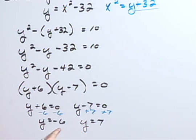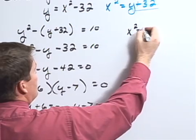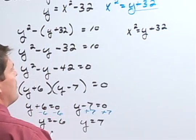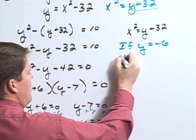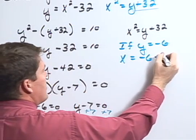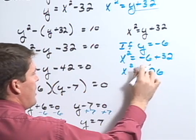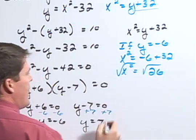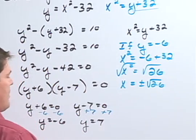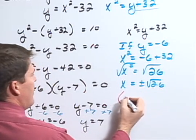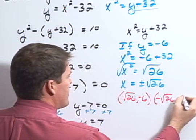Now that I have two y values, I need to find the corresponding x values. Remember that x squared equals y plus 32. So if y equals negative 6, then x squared equals negative 6 plus 32, which equals 26. Taking the square root of both sides, x equals positive or negative square root of 26. This gives two solutions: positive square root of 26 comma negative 6, and negative square root of 26 comma negative 6.